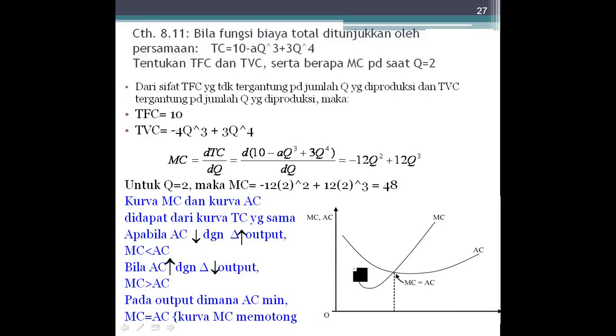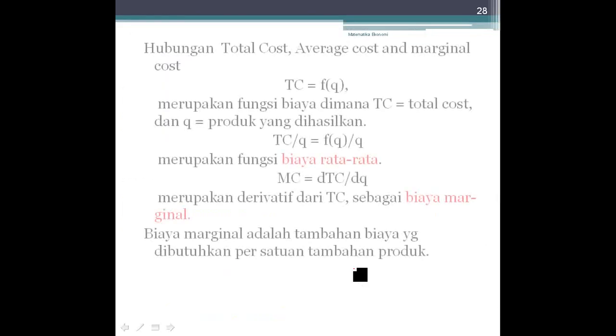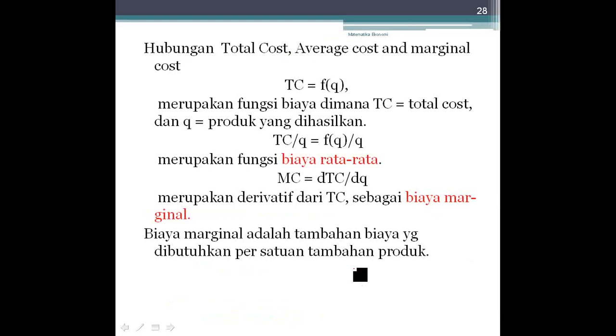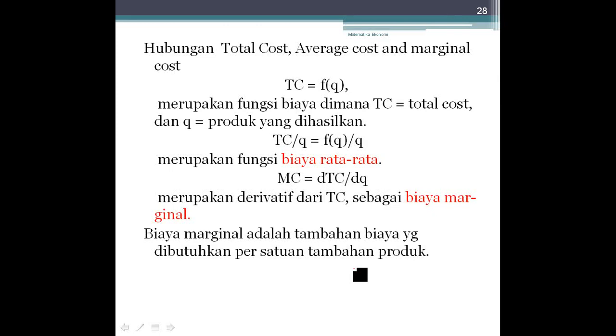Oke, 8.13 lihat lagi. Ini yang dari penjelasan yang sebelumnya, hubungan total cost, average cost dan marginal cost. TC dengan fungsi Q, biaya rata-ratanya. MC sama dengan turunan pertama dari total cost dan MC itu biaya marginal.